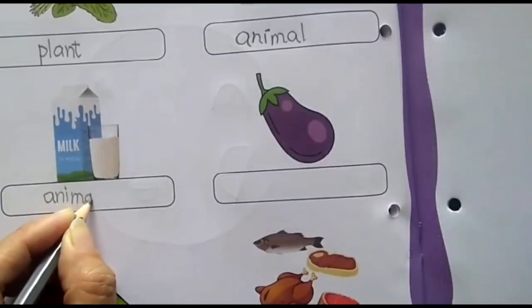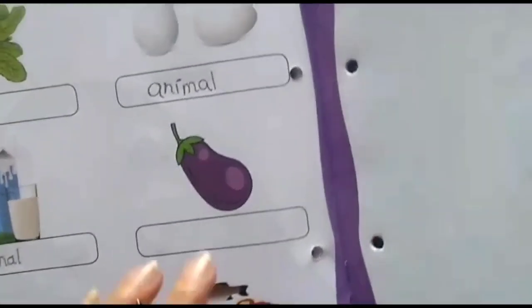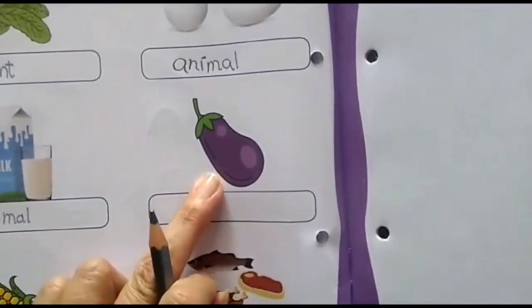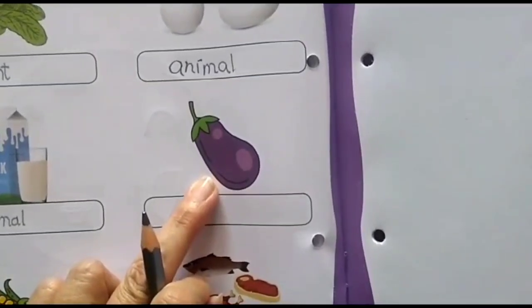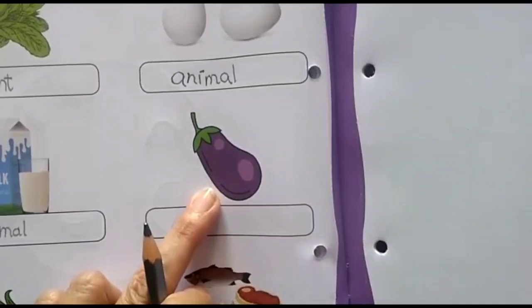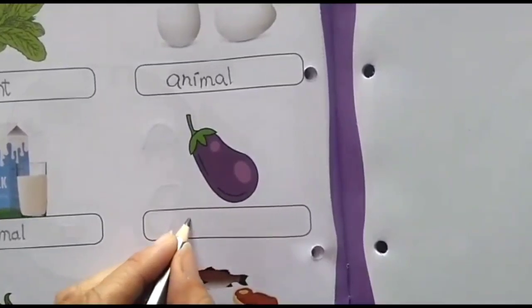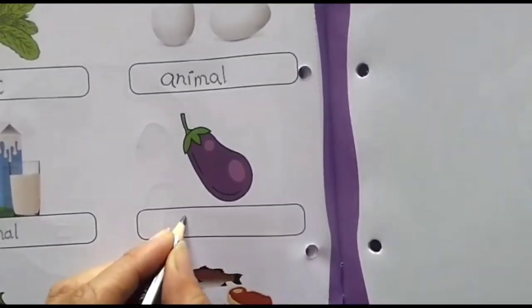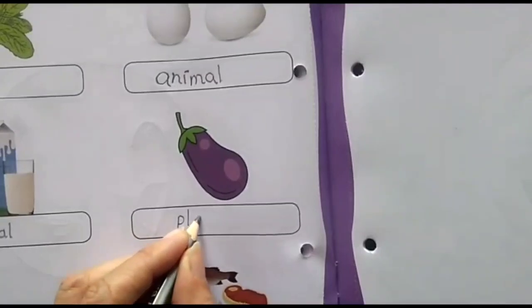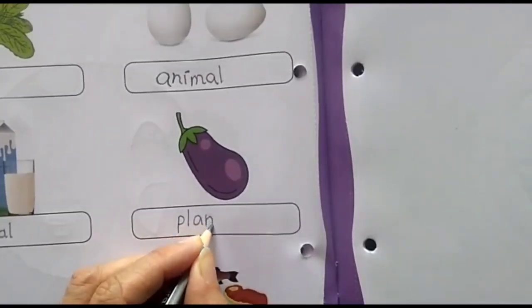Now, what is this? This is brinjal. From where do we get brinjal? Plants or animals? You must be able to tell me. From plant. Right? So here we are going to write the word plant. Let's write it. P-L-A-N-T. Plant.